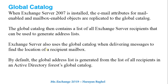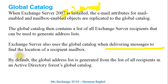Regarding the global catalog: when Exchange Server is installed, email attributes for mail-enabled and mailbox-enabled objects are replicated to the global catalog. The global catalog then contains a list of all Exchange Server recipients, which can be used to generate address lists. Exchange Server also uses the global catalog when delivering messages to find the recipient mailbox location. By default, the global address list is generated from the recipients in the Active Directory forest global catalog.